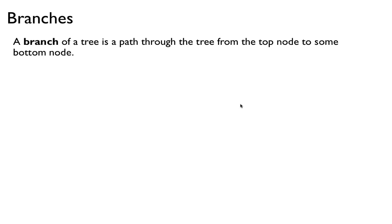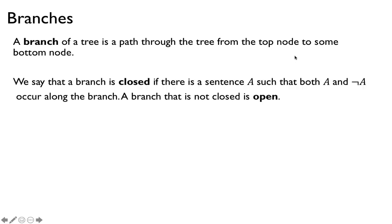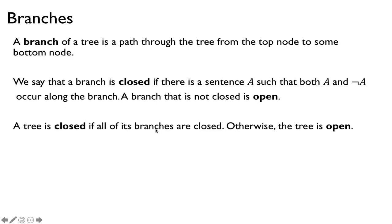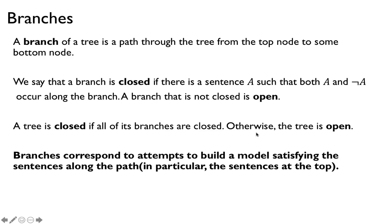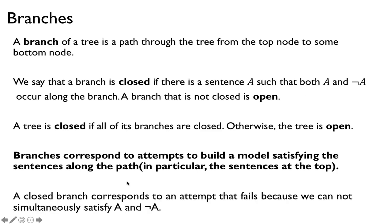A branch of a tree is a path from the top node to some bottom node. We say that a branch is closed if there is a sentence a such that both a and not-a occur along the same branch; a branch is open if it is not closed. The tree is closed if all branches are closed, otherwise the tree is open. Branches correspond to attempts to build a model satisfying the sentences at the top, and a closed branch corresponds to an attempt that fails because we cannot simultaneously satisfy a and not-a.